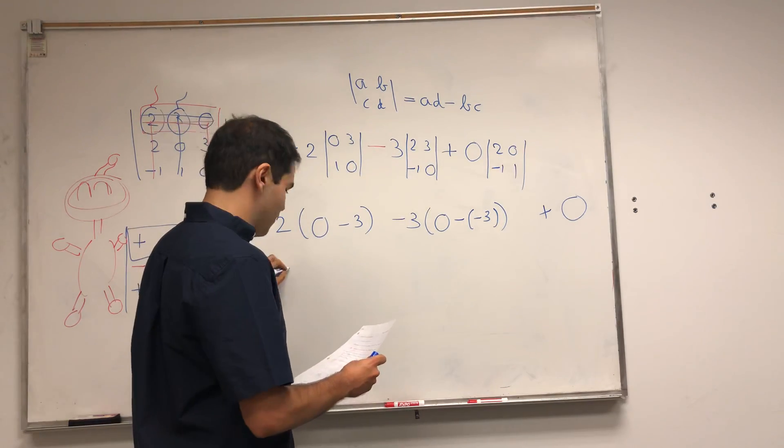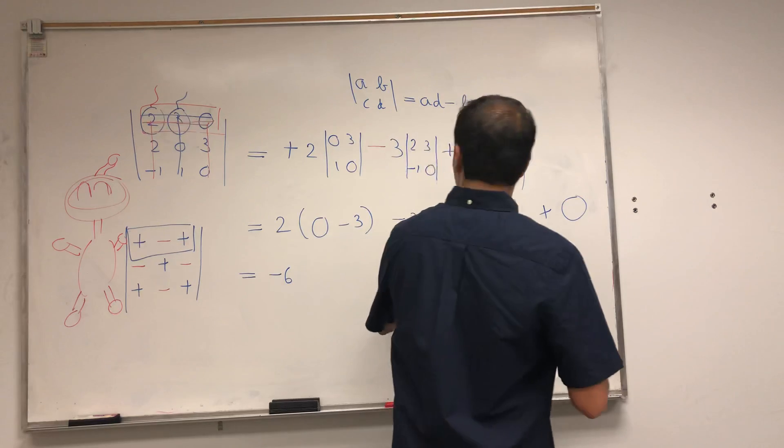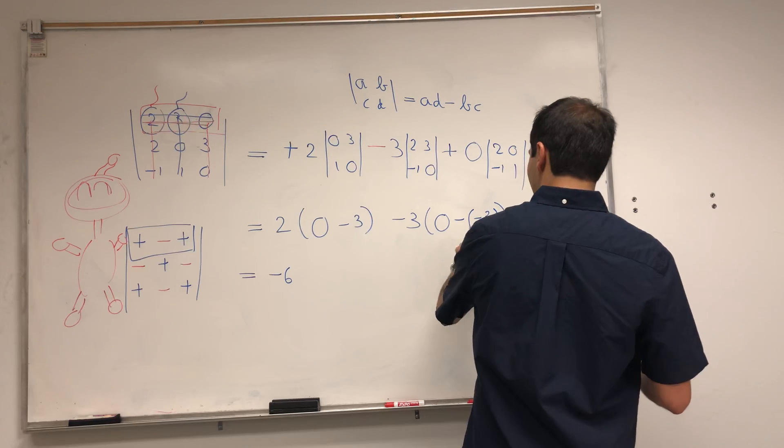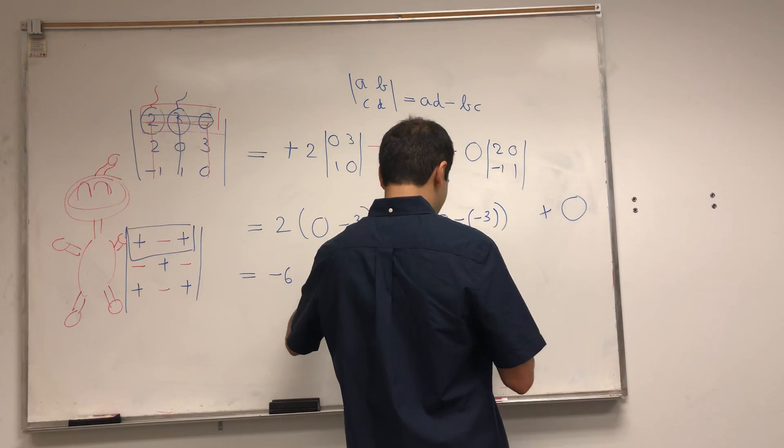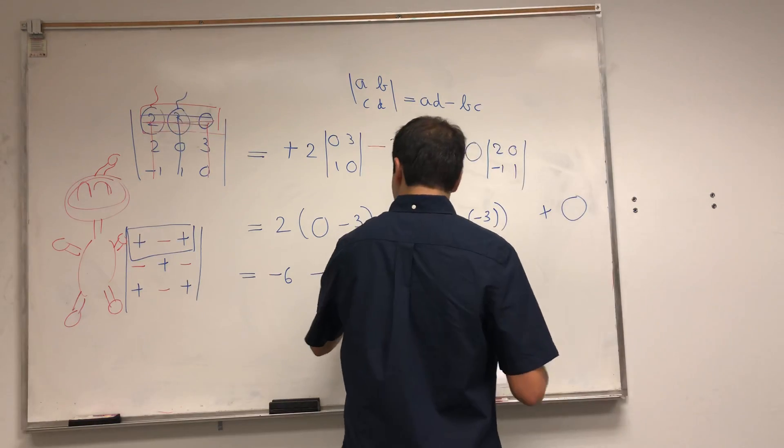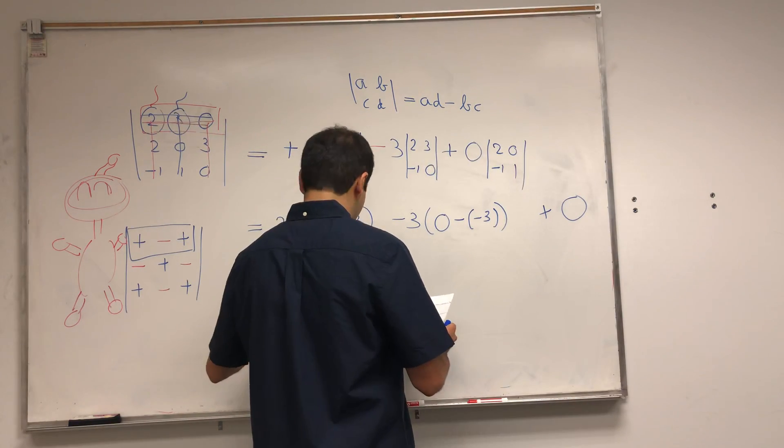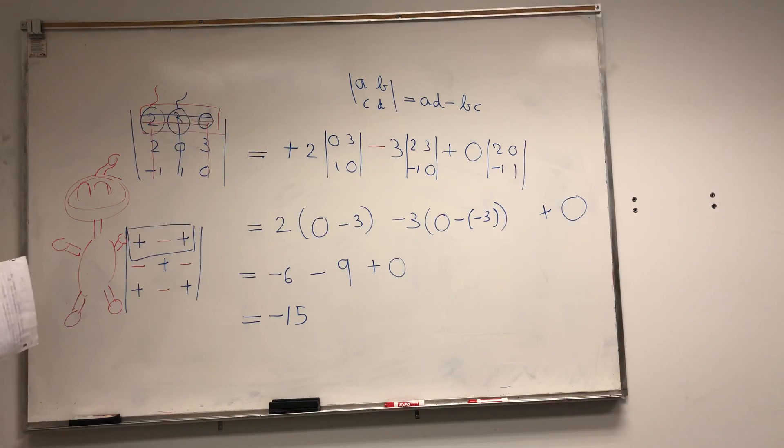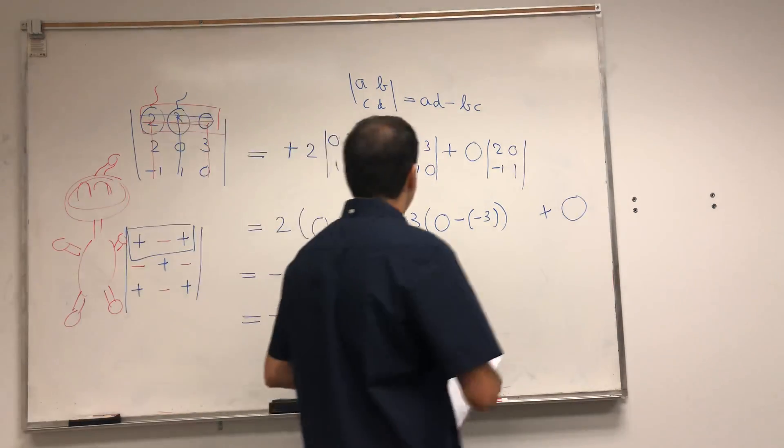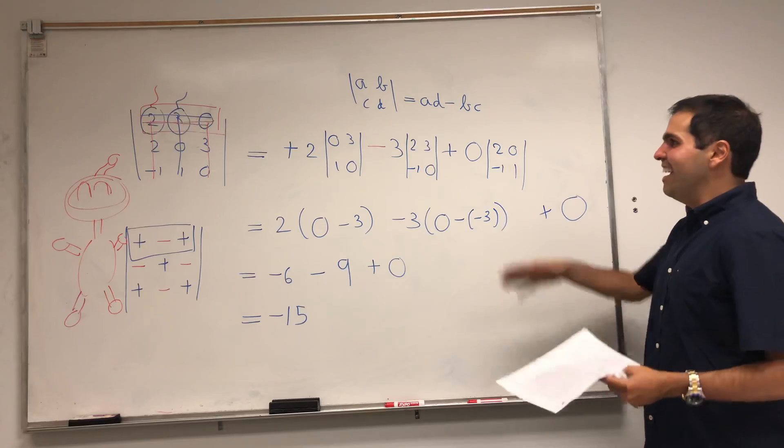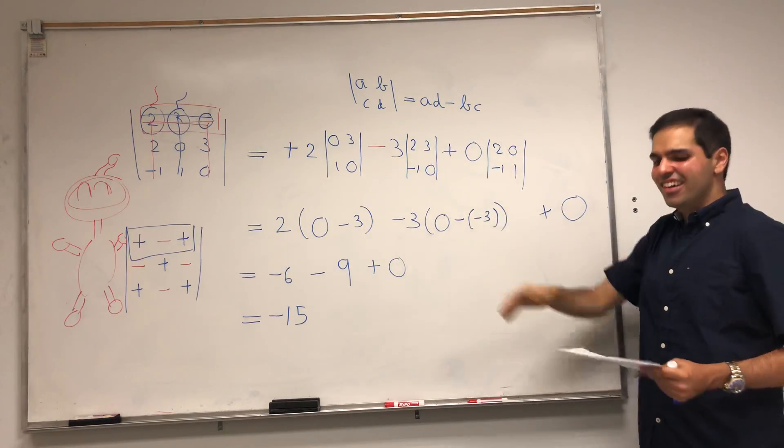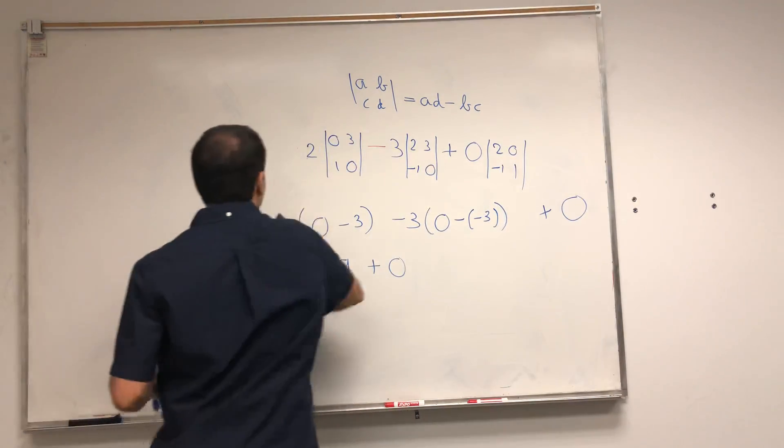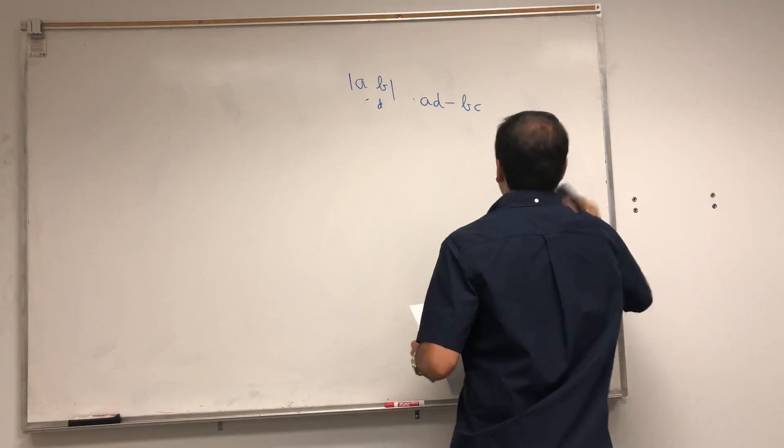And so we get two times minus three, which is minus six. We get minus three times minus three times three, which is minus nine, and then zero, which is zero. And we're left with minus 15. Cool, so that is a determinant. It doesn't have to be positive. It can be negative here. All right, and in fact, as I said, zeros are very good with determinants. So in fact, let's have a little bit of fun.